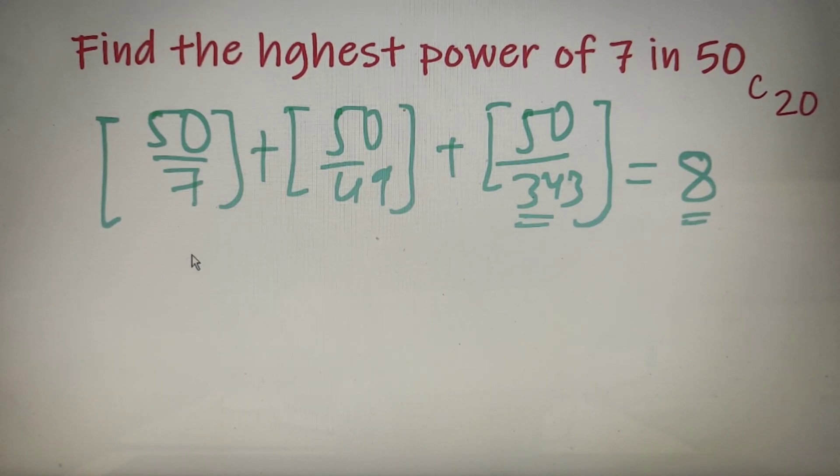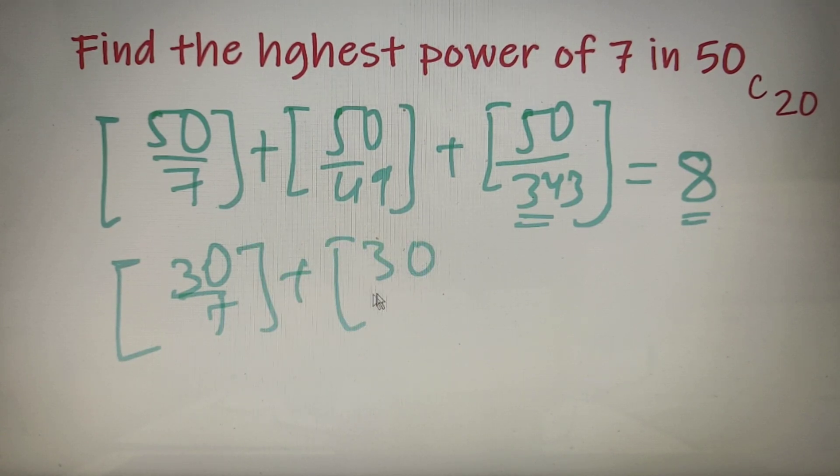Now we will calculate the highest power of 7 in 30 factorial. That will be equal to the greatest integer value of 30 divided by 7 plus the greatest integer value of 30 divided by 49. We will stop at 49 because 49 is greater than 30, and upon calculation this value will be equal to 4.